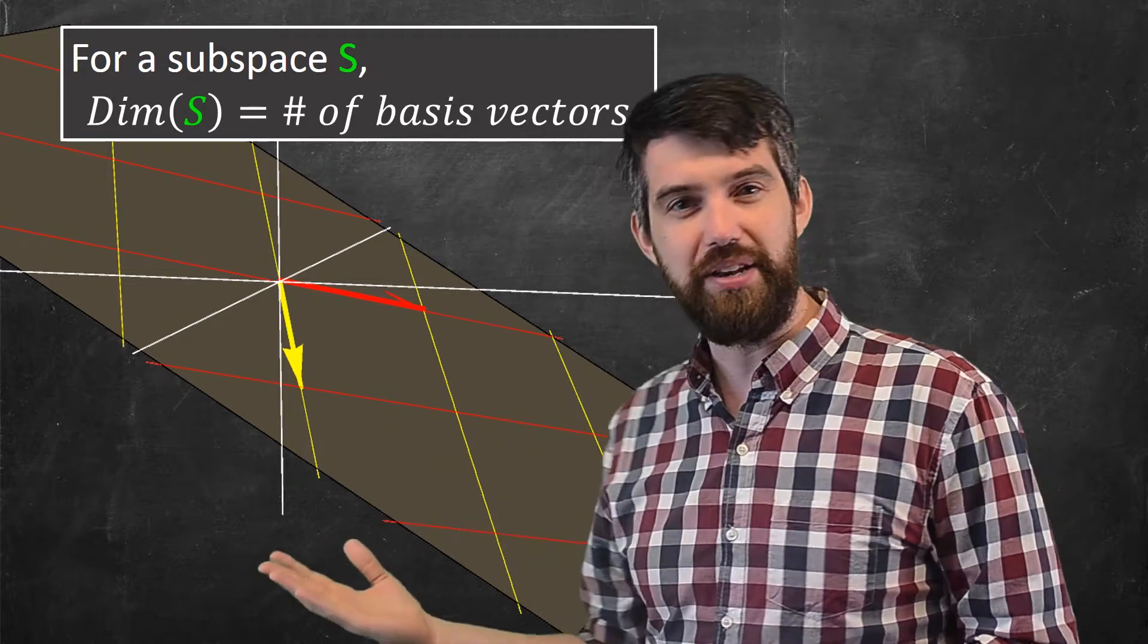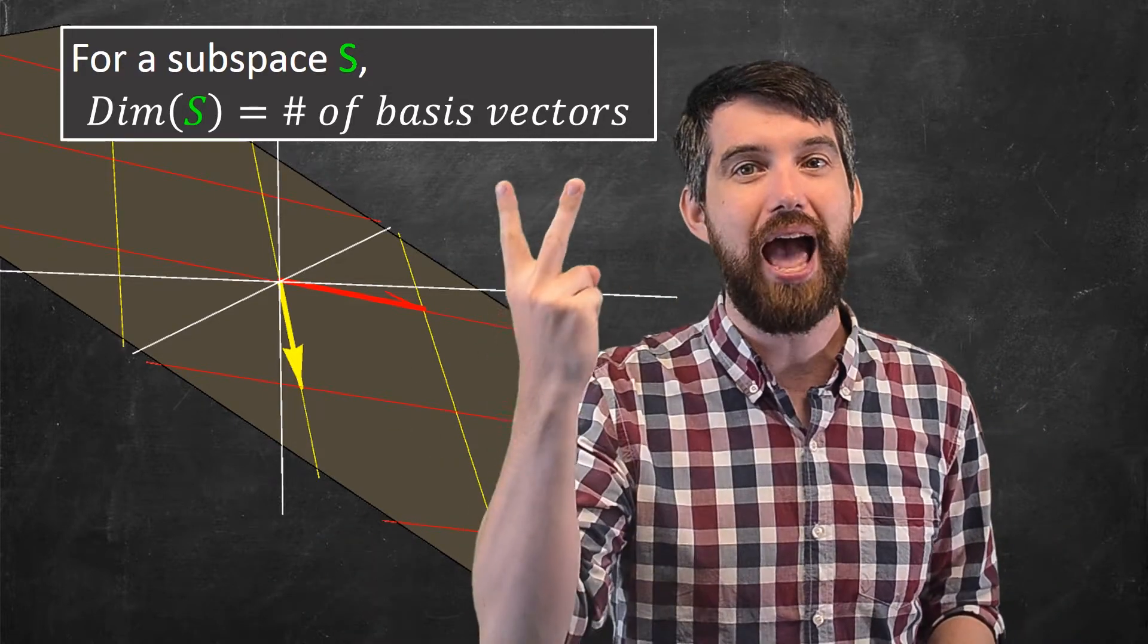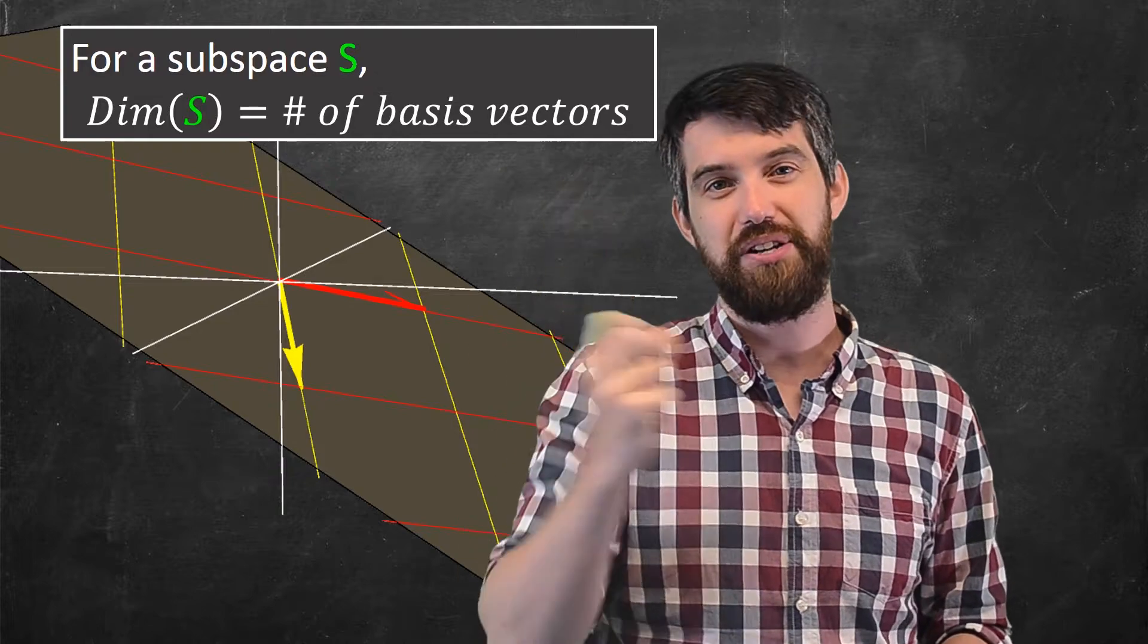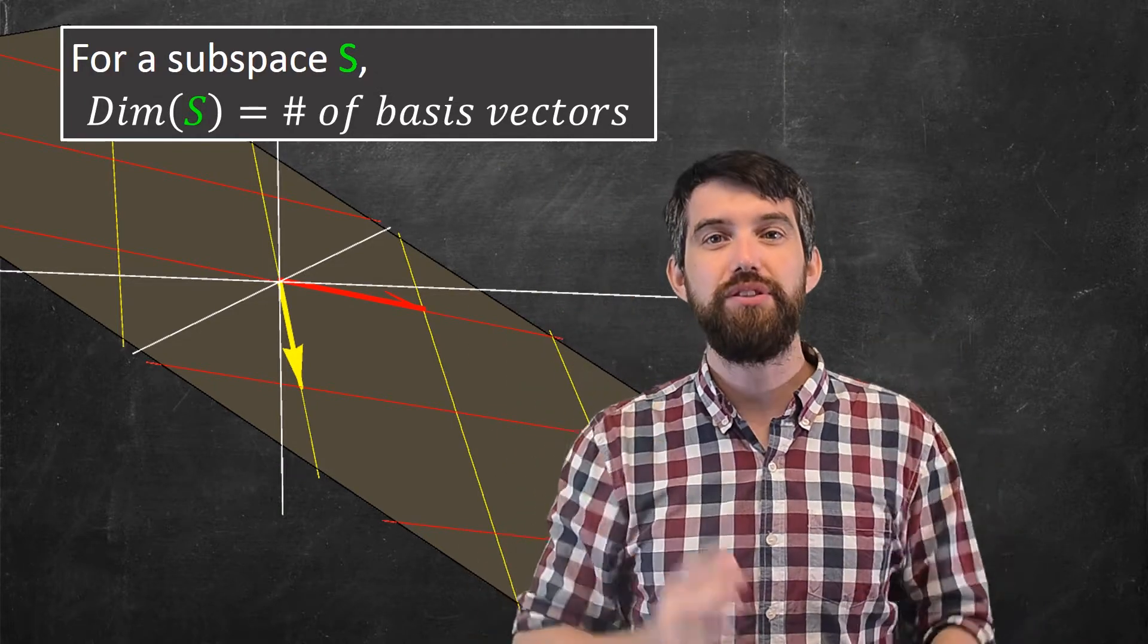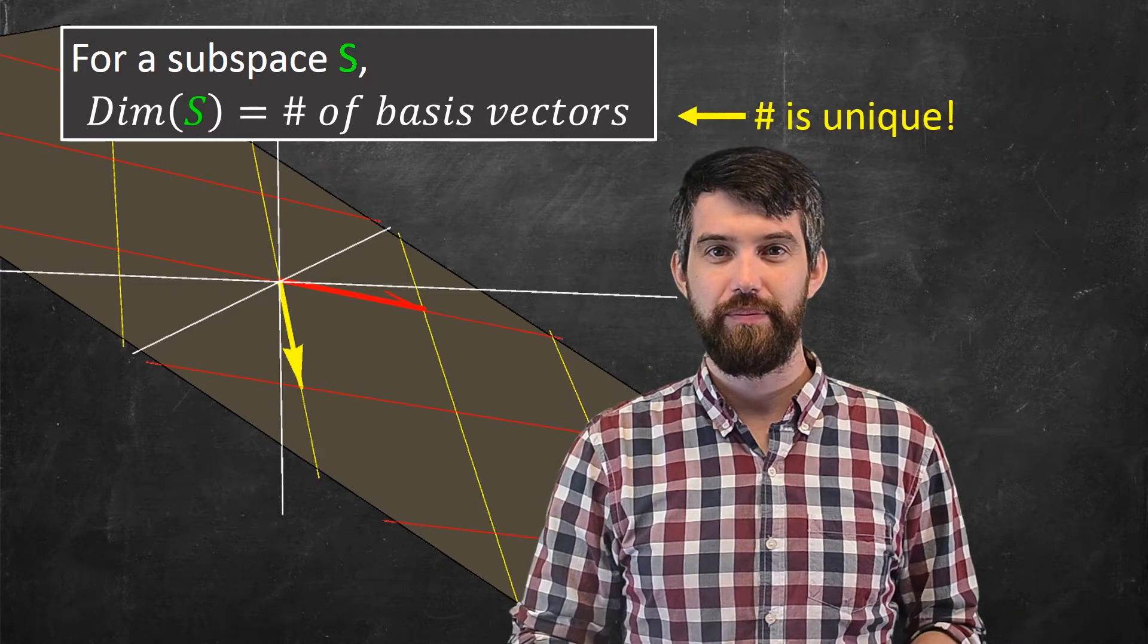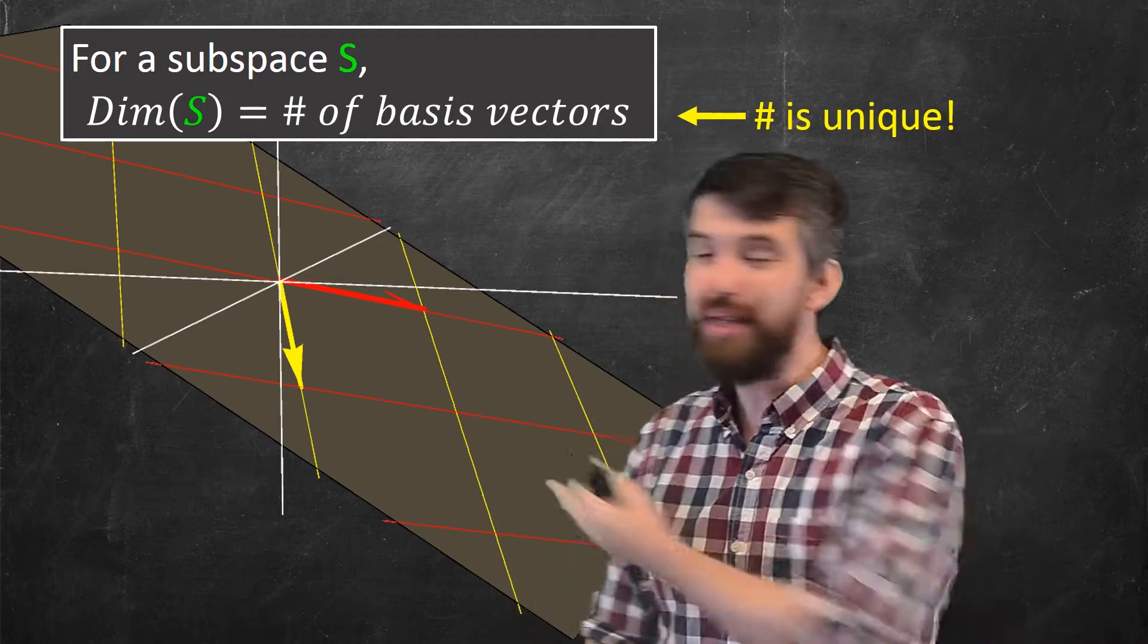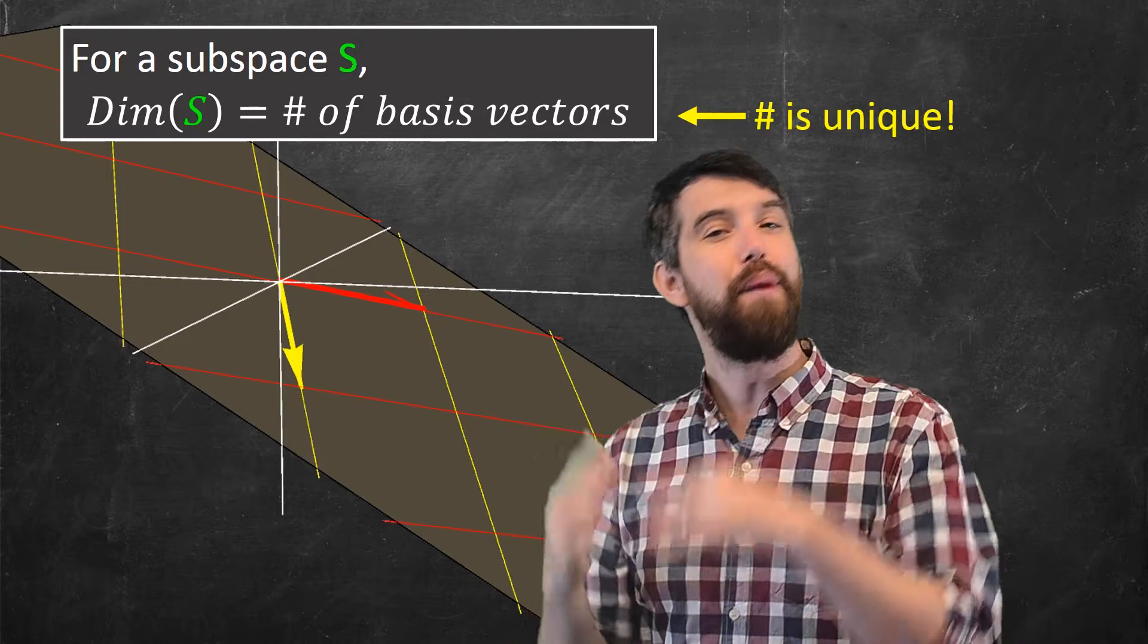Now, it looks a little bit different, but keep in mind that again we have two different basis vectors. And indeed, the number of basis vectors is always unique. If we've got a subspace, maybe it's this plane, maybe it's something else. I come up with a basis for it, you come up with a basis for it.